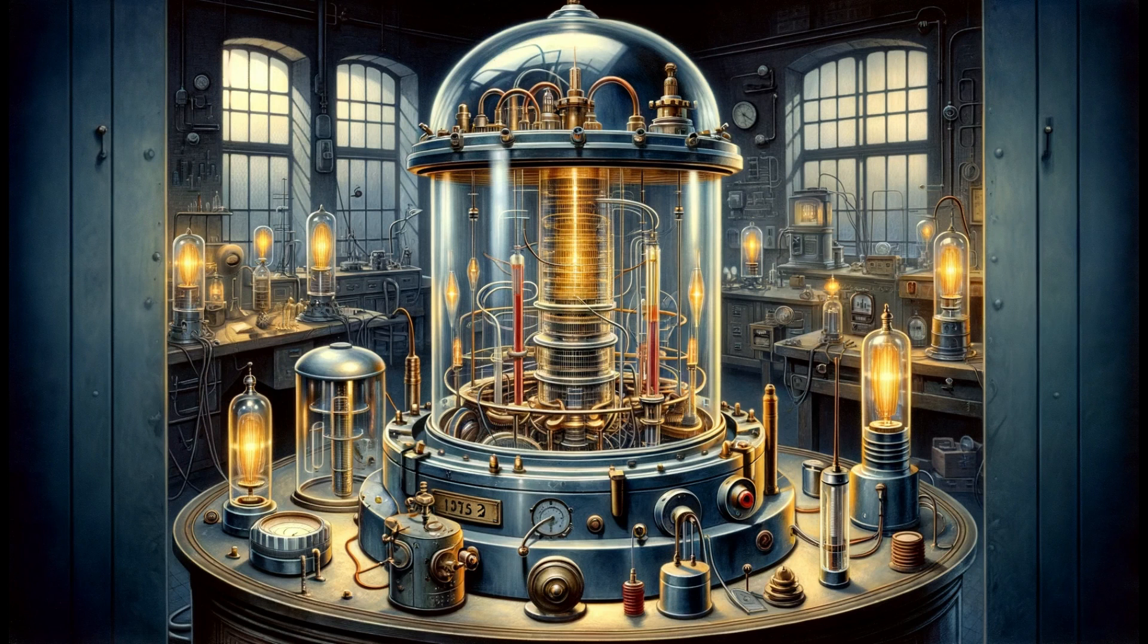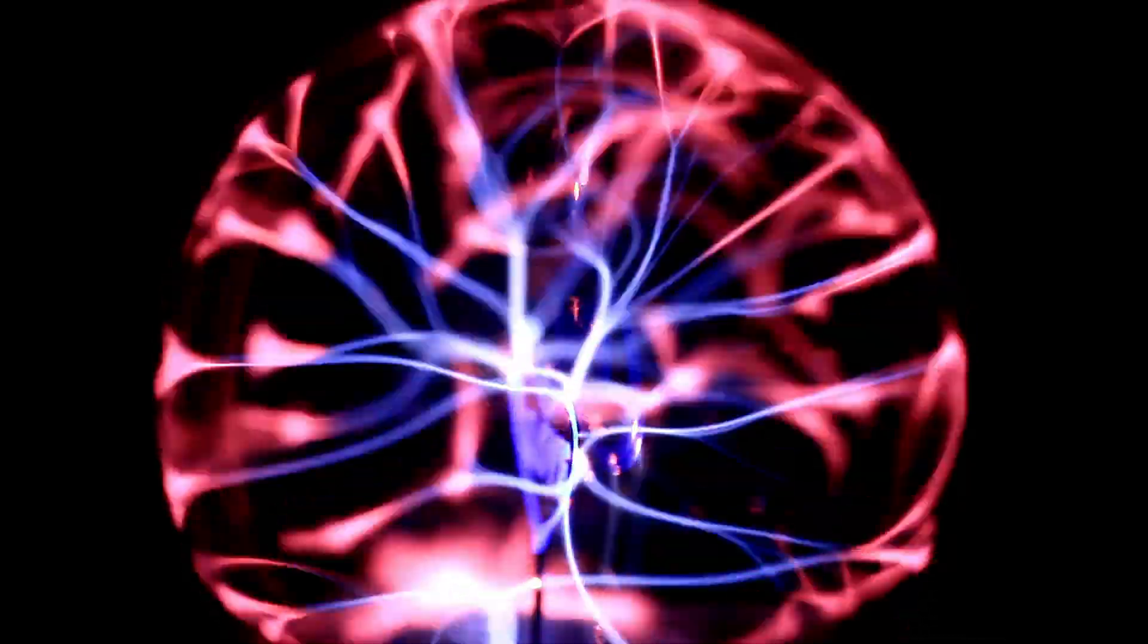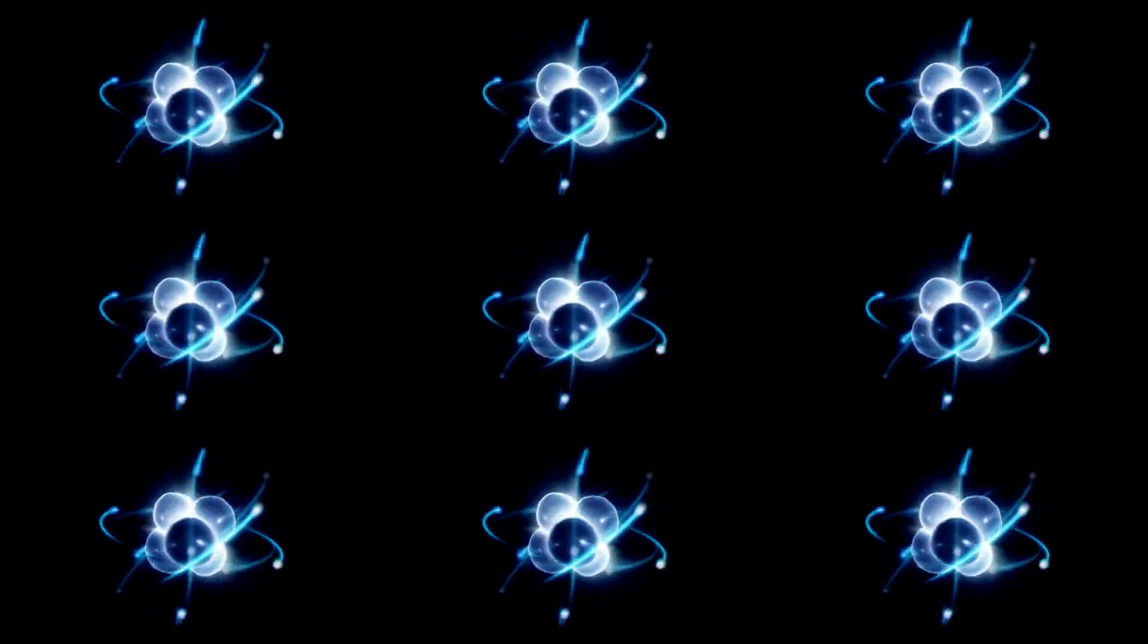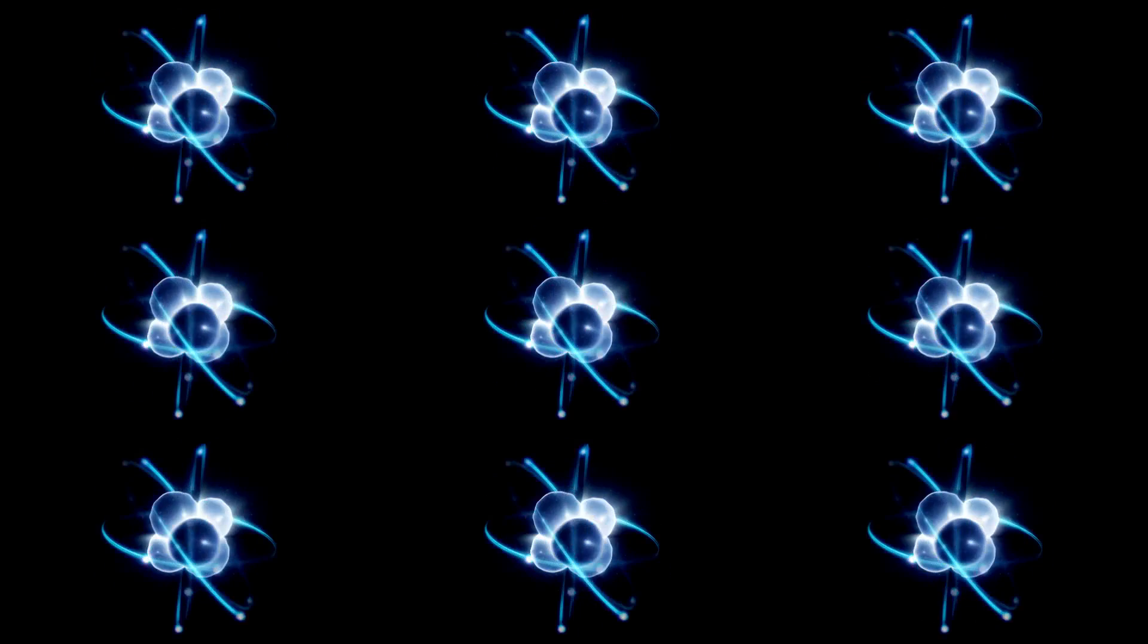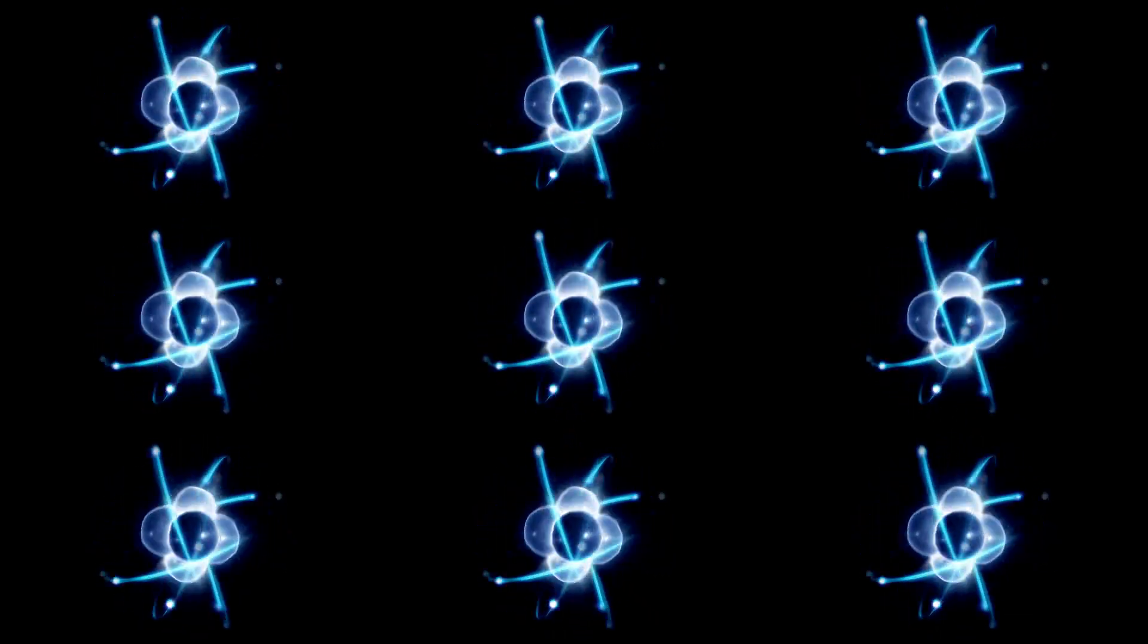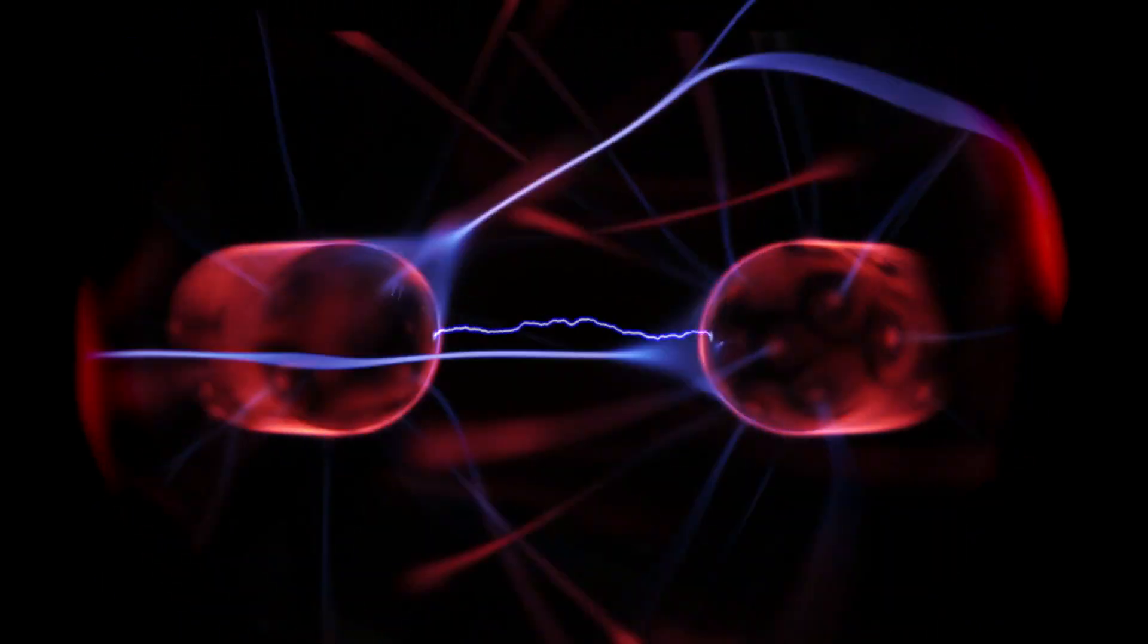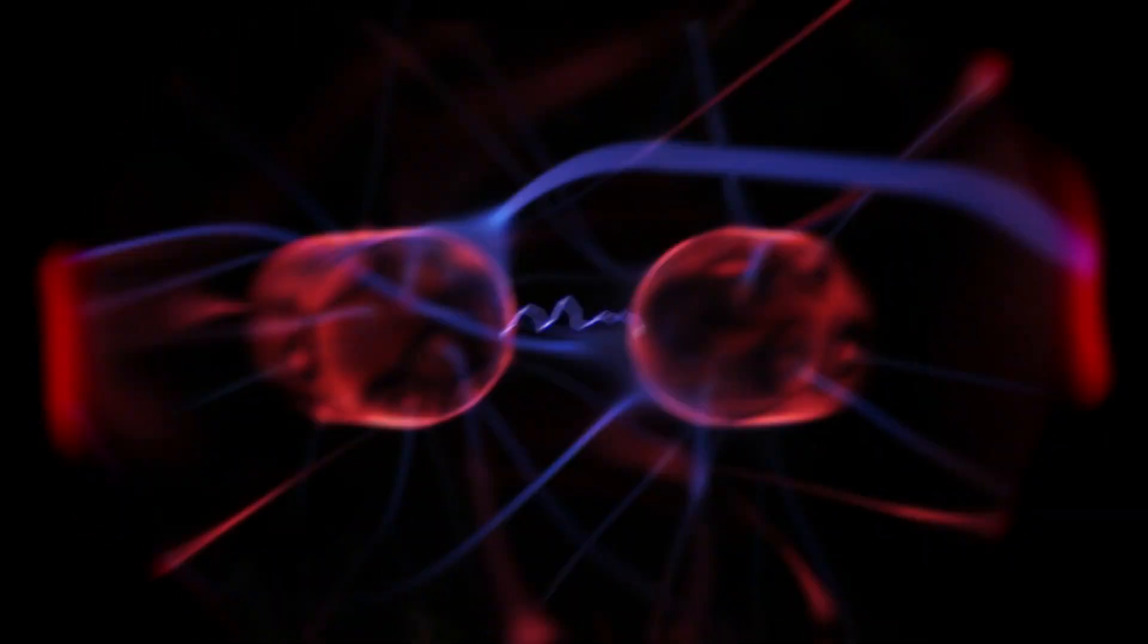Central to the operation of the Death Ray was the vacuum chamber. A vacuum chamber is an enclosure from which air and other gases are removed, creating a space devoid of matter. Why is this important? In a vacuum, electrons can travel unimpeded by air molecules, which normally slow them down. It's like pushing those tiny balls on a smooth surface without any obstacles. This allows electrons to reach incredibly high speeds, forming a concentrated beam of energy.